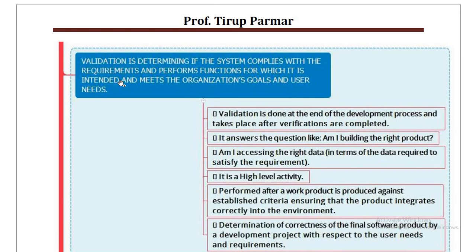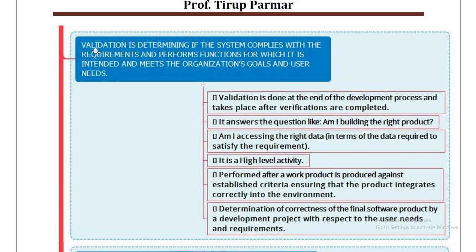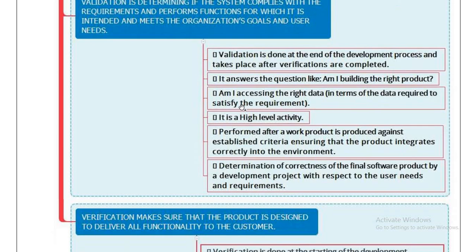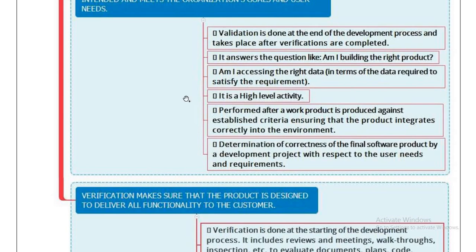Here is the theoretical definition: validation determines if the system complies with the requirements — validated through unit testing, integration testing, and user acceptance testing. Validation is done at the end of the development process and takes place after verification is completed. The purpose of validation is to make sure that the product software meets user requirements.